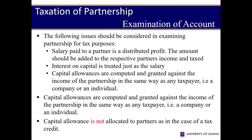If it's a partnership business, again, a partnership business is not deemed as a distinct entity from the partners. Therefore, any gains or profit from the partnership business is deemed as profit for the partners. You will share the gains to the various partners and then tax the various partners according to the individual tax schedule. If there's any salary paid to a partner, it will be added to the gains the partner made. If there's any interest on capital, it is the same — it will be added to the gains. Capital allowance is not granted to individual partners; rather, it is granted to the business and therefore deducted from the business income.